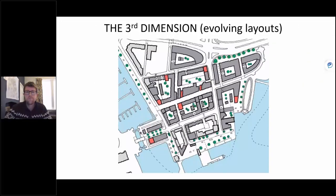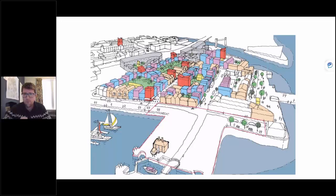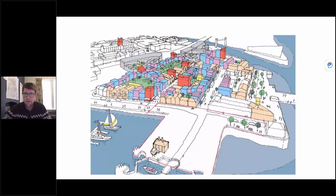The third and final ingredient I'm going to talk about today is the third dimension. This is the cornerstone of master planning — the two-dimensional layout drawing that everyone will be familiar with. But by the third dimension I'm really talking about evolving layouts. Not just being able to draw in 3D, although that really helps. It's great to use this type of drawing especially when engaging with stakeholders and the public — we can test different ideas, different heights, different enclosure ratios.